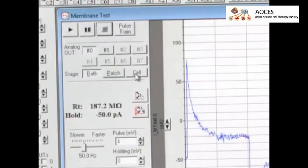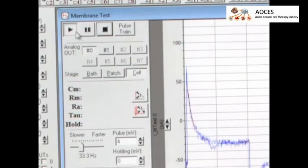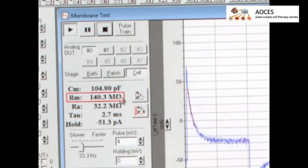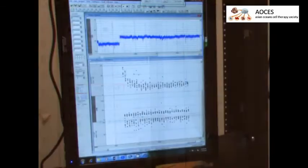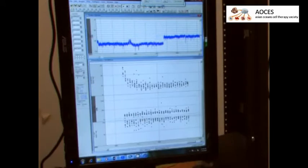Switching to cell mode in the membrane test, view different parameters of the cell, such as input resistance, series resistance, and membrane capacitance. After achieving the whole cell configuration, continue to monitor these parameters during recording.